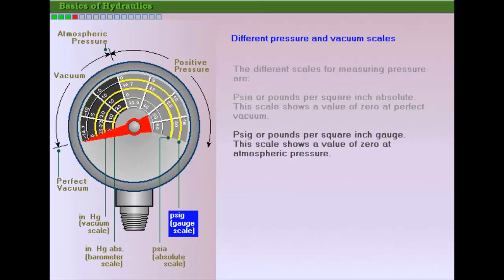PSIG, that is, pounds per square inch gauge. This is a scale which does not measure atmospheric pressure. This scale is at zero with atmospheric pressure. Notice that the reading on the PSIA scale is 14.7 at this stage.